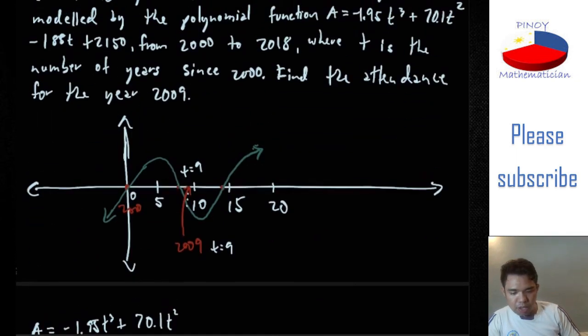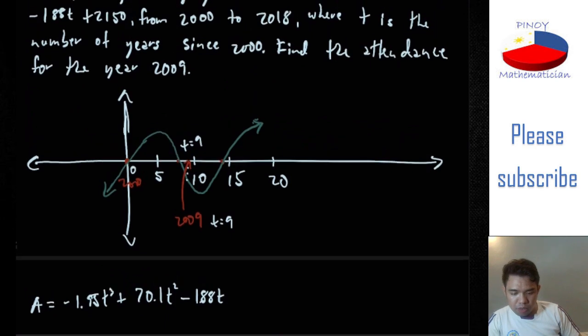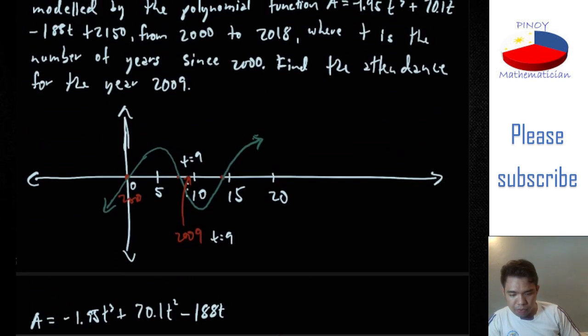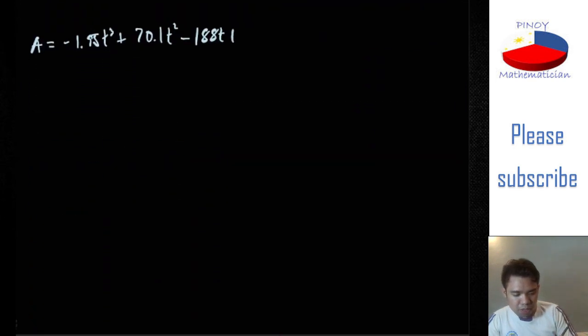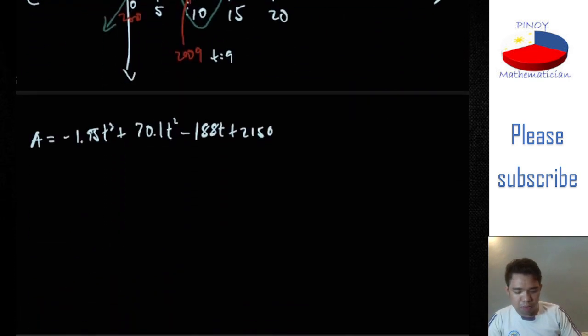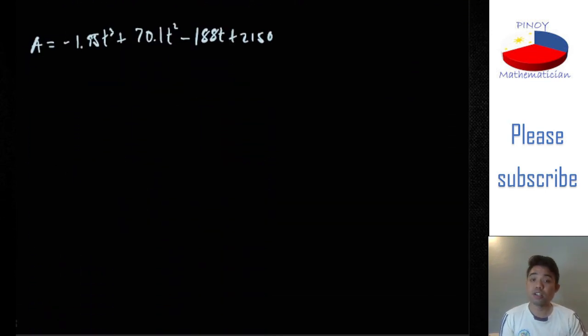And then plus 70.1T². And then negative 188T. Sorry, negative 188T. It's not negative 1 point. So it's negative 188T plus 2,150. 2,150. Negative 1.95T³. 70.1T². 188T plus 2,150.